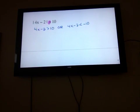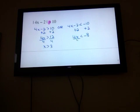You should never come up with the same number. Like don't come up with five and five. So we solve. We add two. So four x is greater than twelve. Divide by four. And x is greater than three. And on the other one. Same math. Add two. Four x is less than negative eight. And divide four. And x is less than negative two.